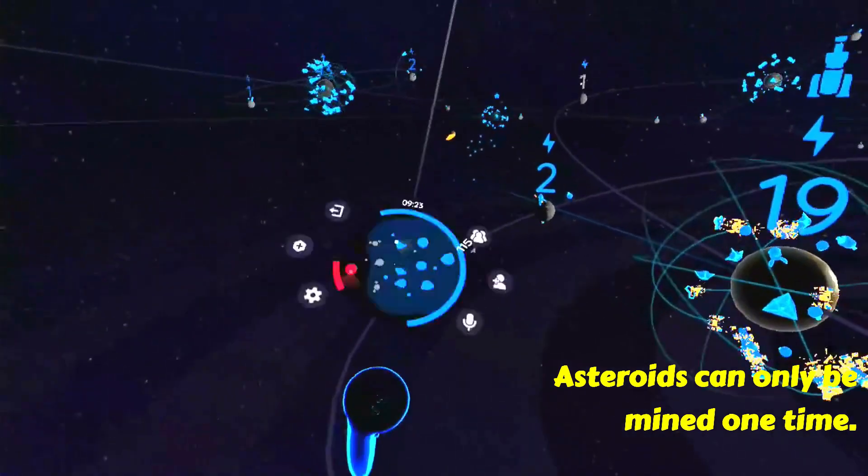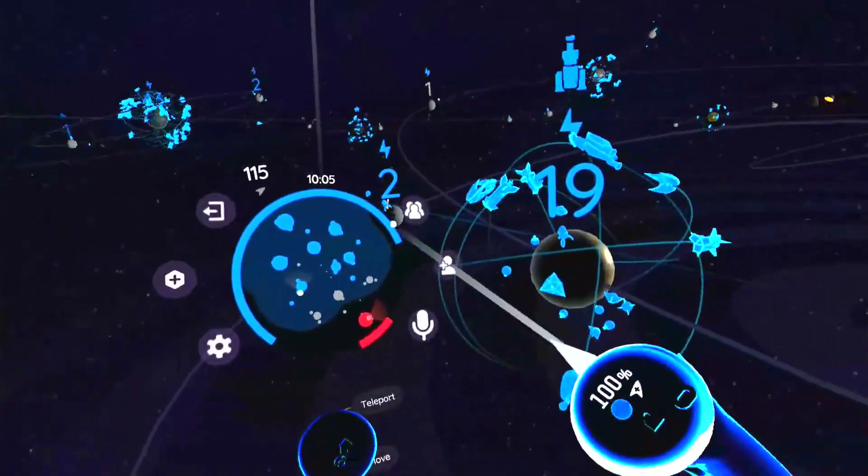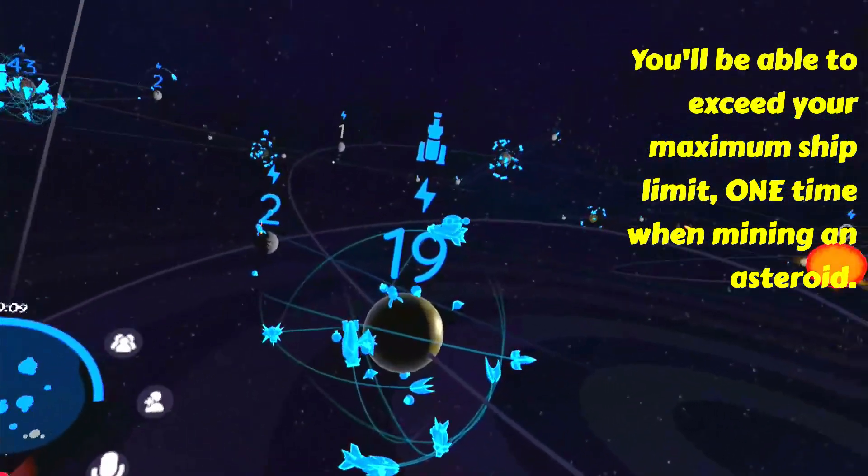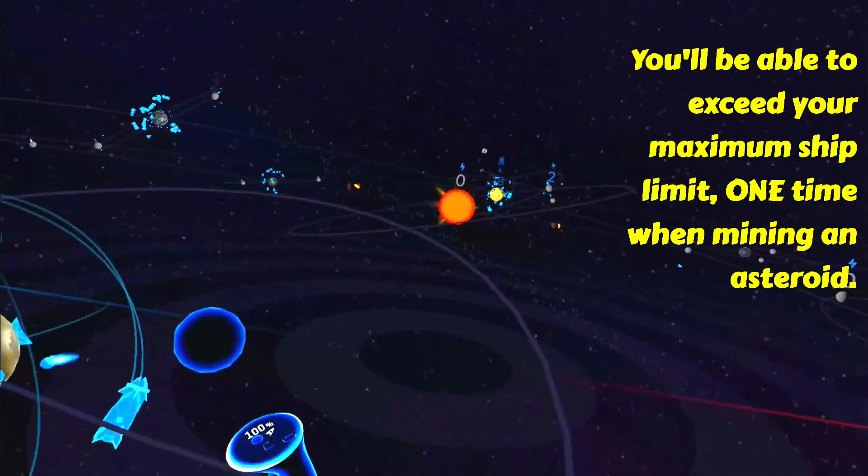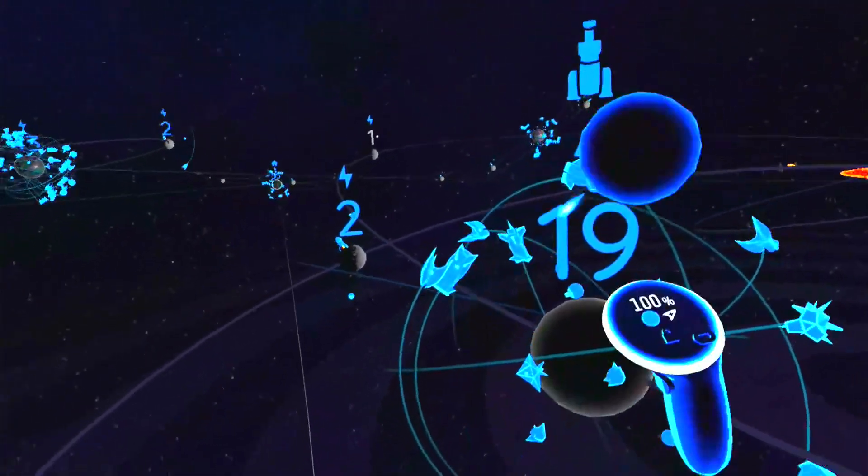You can only mine an asteroid once. If you're at your maximum ship limit, you'll be able to mine one asteroid and get the 10 ships just once. After that, you have to be below your ship limit to receive any additional ships from an asteroid.